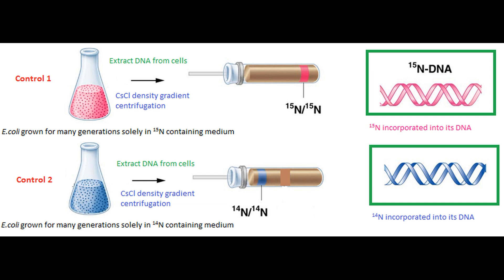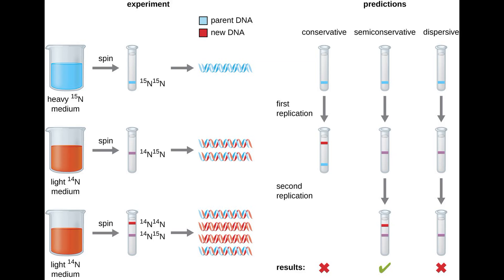They grew two control populations of E. coli for several generations. One was supplied with a nitrogen source containing only the N15 isotope, and the other with the N14 isotope. As expected, DNA extracted from the cells that were grown with N15 had a higher density compared to DNA from the cells grown with N14. Next, they took a sample of E. coli that had been growing with N15, thus having only that nitrogen isotope in their DNA, and transferred them to a medium with N14. After each cell division, they extracted DNA from this population and compared it to the densities of the control populations.